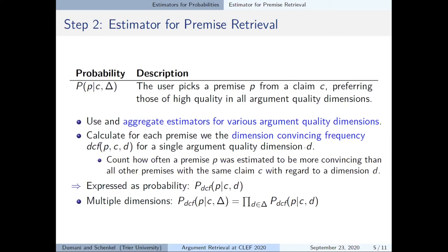Now let d, small d, be a single argument quality dimension. Now for each premise we can calculate the dimension convincing frequency, dcf. For this we simply count how many times a classifier returned for a premise that it was more convincing than all other premises with the same claim with regard to this specific dimension d. And we can express this as a probability. And to extend this towards multiple dimensions we can simply multiply the per dimension probabilities which lead to the following equation.